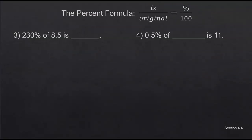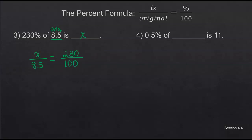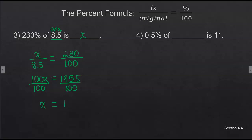Here's our next one: 230 percent of 8.5. The original number is 8.5, and the 'is' is my x — so we write x over 8.5 equals 230 over 100. Put your percent in without the percent symbol because the 100 is already in there. Cross multiply: 100x equals 8.5 times 230, which is 1,955. Divide by 100 — it's easy, just move the decimal — and x equals 19.55.